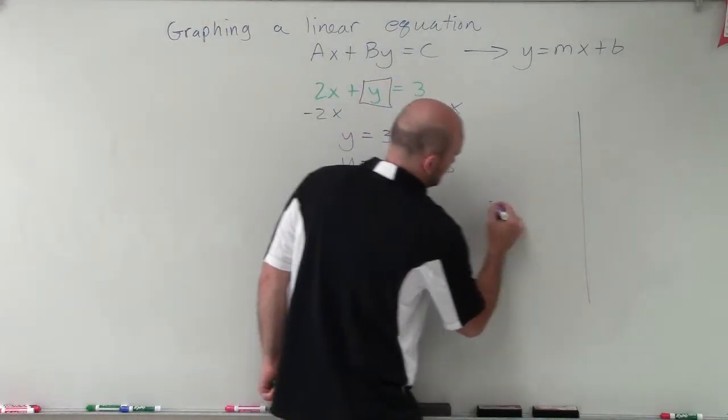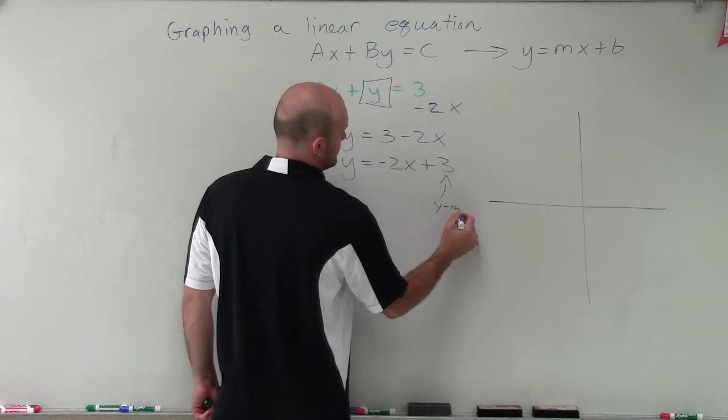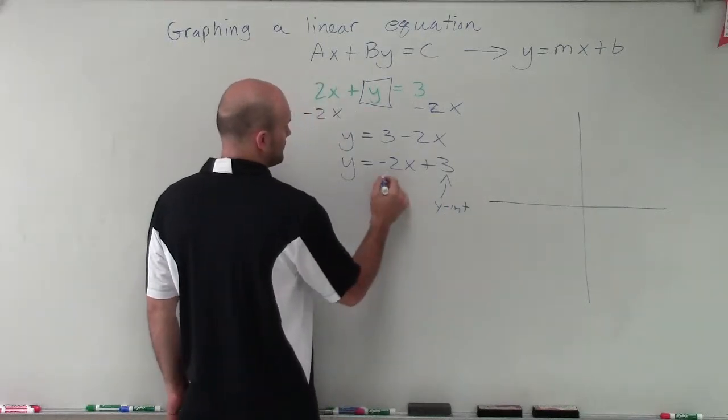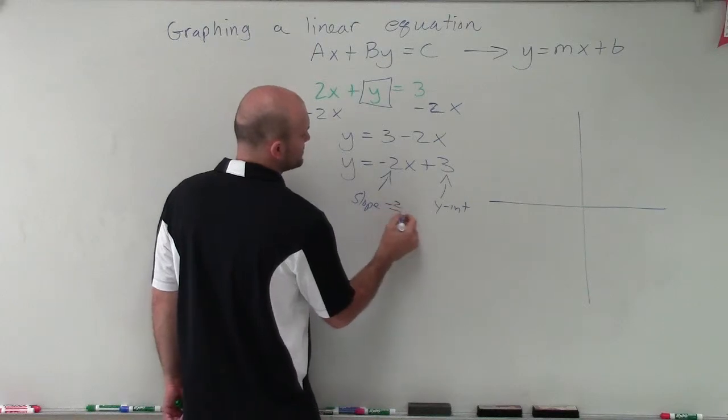To graph this, I need to make sure I understand what my y-intercept is and then my slope, which we can write as a fraction of negative 2 over 1.